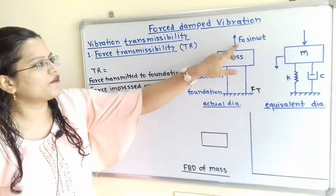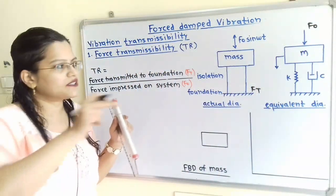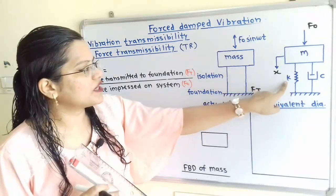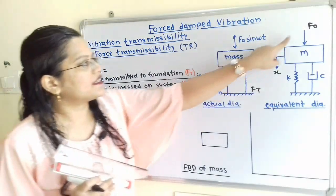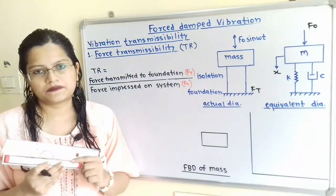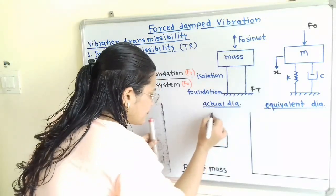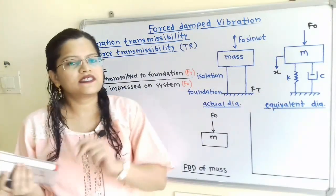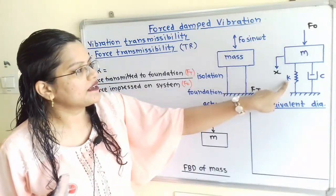For this case, we will consider force F₀ acting in the downward direction. When F₀ acts downward, the displacement of mass M, X, is also in the downward direction. Instead of the isolator, we have placed a spring as well as a damper. X is the displacement of mass M in the downward direction, and force F₀ also acts in the downward direction. We will draw the free body diagram of the mass.